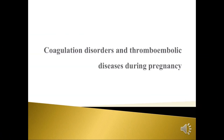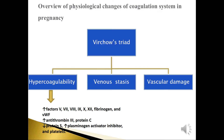Coagulation disorders and thromboembolic disease during pregnancy. There is an overview of the physiological changes of the coagulation system in pregnancy. There is what is called Virchow's triad, which is composed of hypercoagulability, venous stasis, and vascular damage. These are the normal physiological changes that occur during pregnancy.